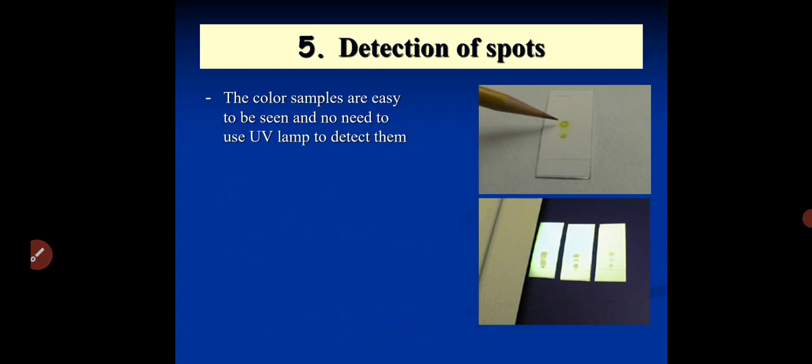Detection of spots. The colored samples are easy to be seen and no need UV lamp to detect that. This is the colored sample. Easily calculate the RF value. RF is the distance traveled by solute and distance traveled by solvent ratio, which is always less than 1. You see that this type of spots. This has 2 spots, this has 3 spots. So we easily separate out also.